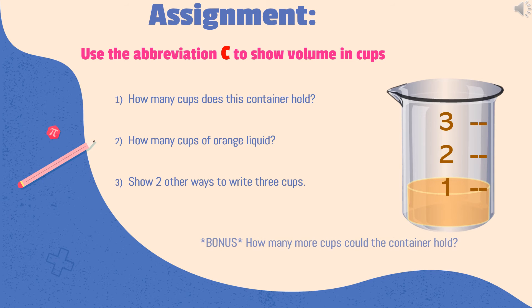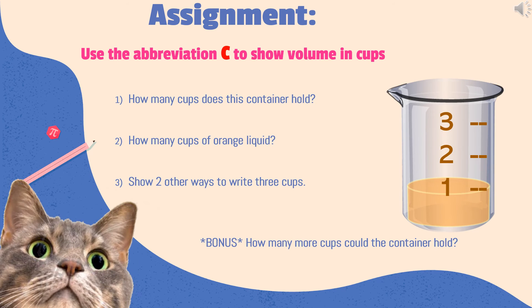Here's your bonus question. How many more cups could the container hold? That's a hard one. Here's a clue. Take the total amount of cups, minus the cups of orange liquid. And how many is left?